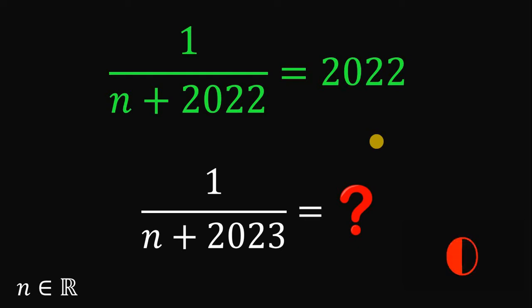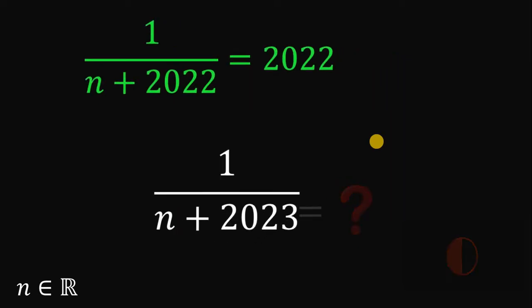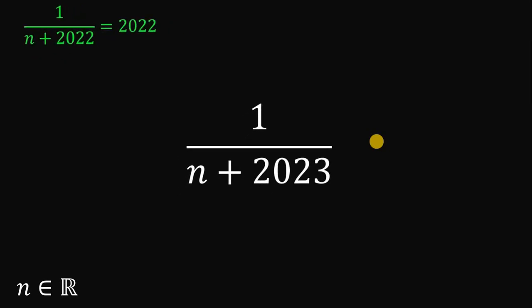Now, let's answer this question together. Alright, so our goal is to evaluate 1 over N plus 2023 given that 1 over N plus 2022 equals 2022.